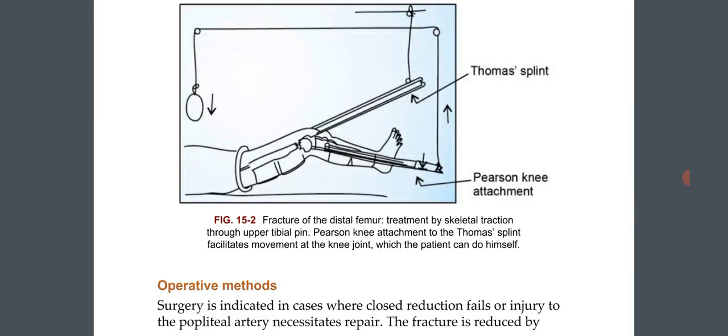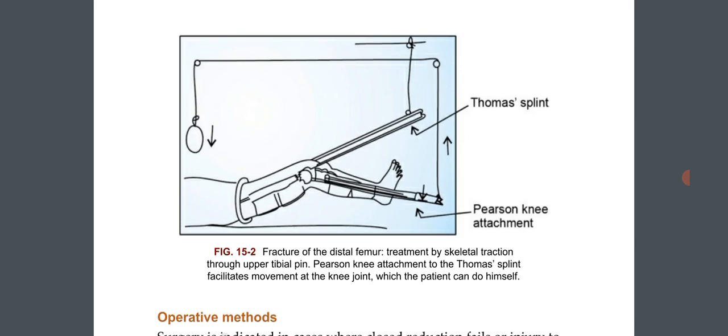Thomas splint and Pearson knee attachment used for fracture of the distal femur. Treatment by skeletal traction through an upper tibial pin. The Pearson knee attachment to the Thomas splint facilitates movement at the knee joint, which the patient can perform himself.